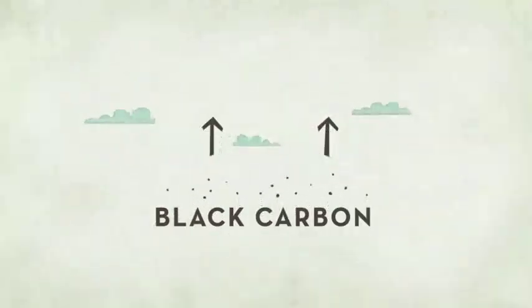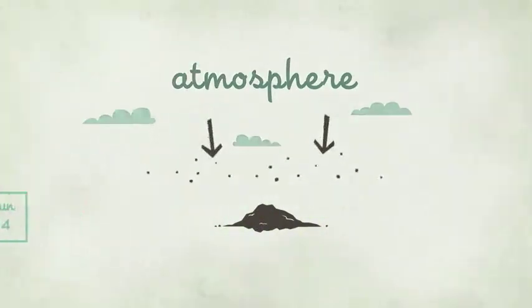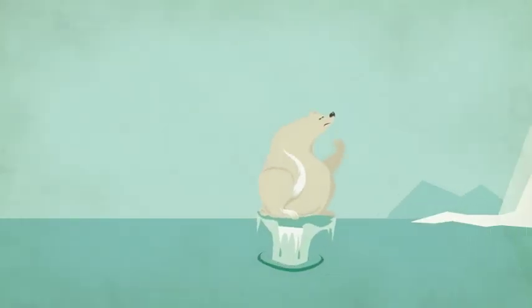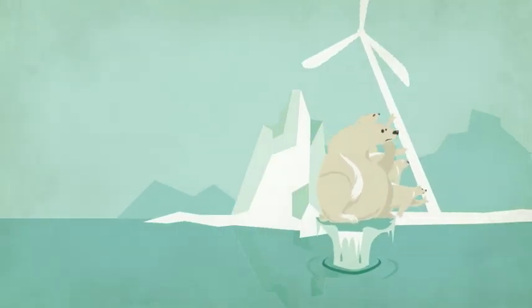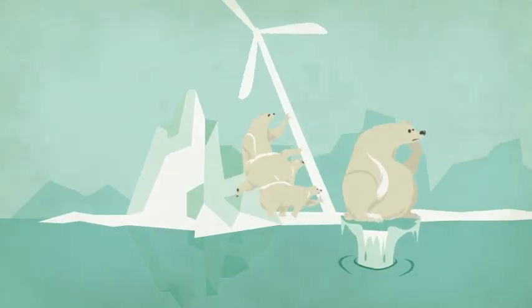And since black carbon only stays in the atmosphere for a couple of weeks, reducing it would produce results immediately. Of course, reducing soot alone won't solve global warming. But solving our soot problem now will help buy time for the Arctic and allow us to deal with the bigger problem of carbon dioxide.